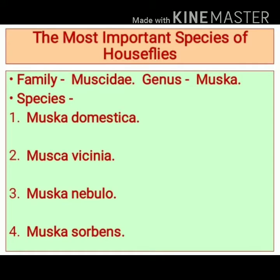considered an important sign of insanitation, and their number is an important index of insanitation. House flies belong to the family Mucidae and the genus Musca. The genus Musca includes different species. Four important species include Musca domestica, Musca vicinia, Musca nebula, and Musca sorbens.